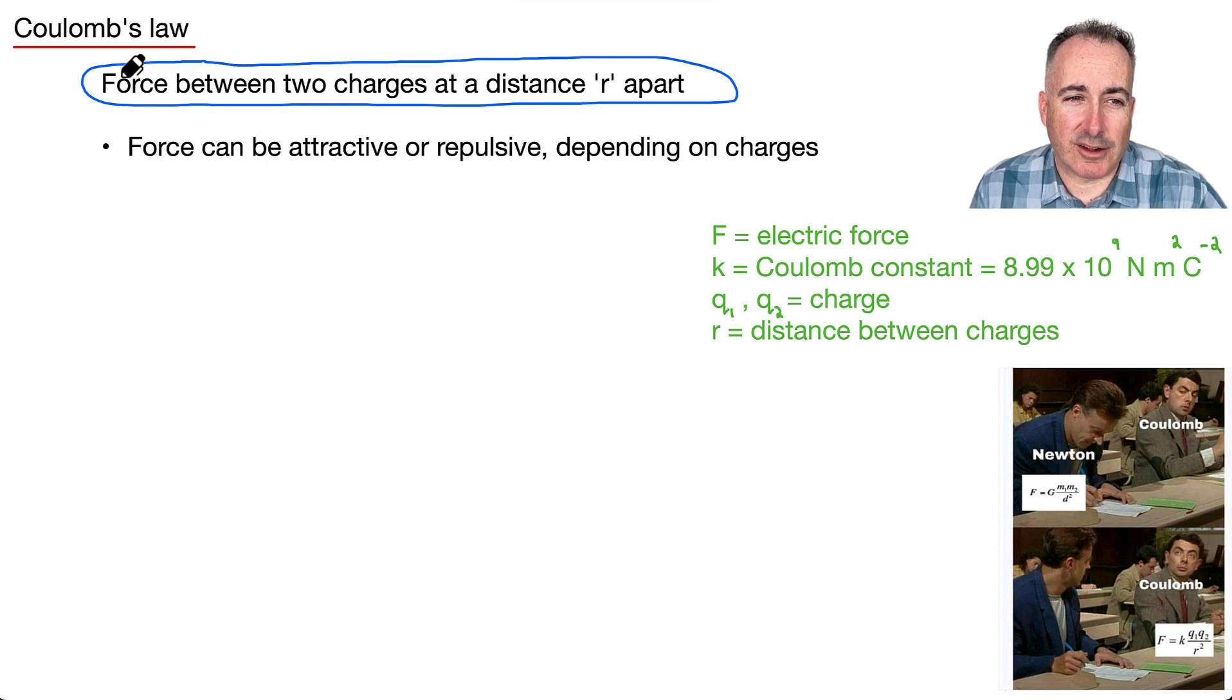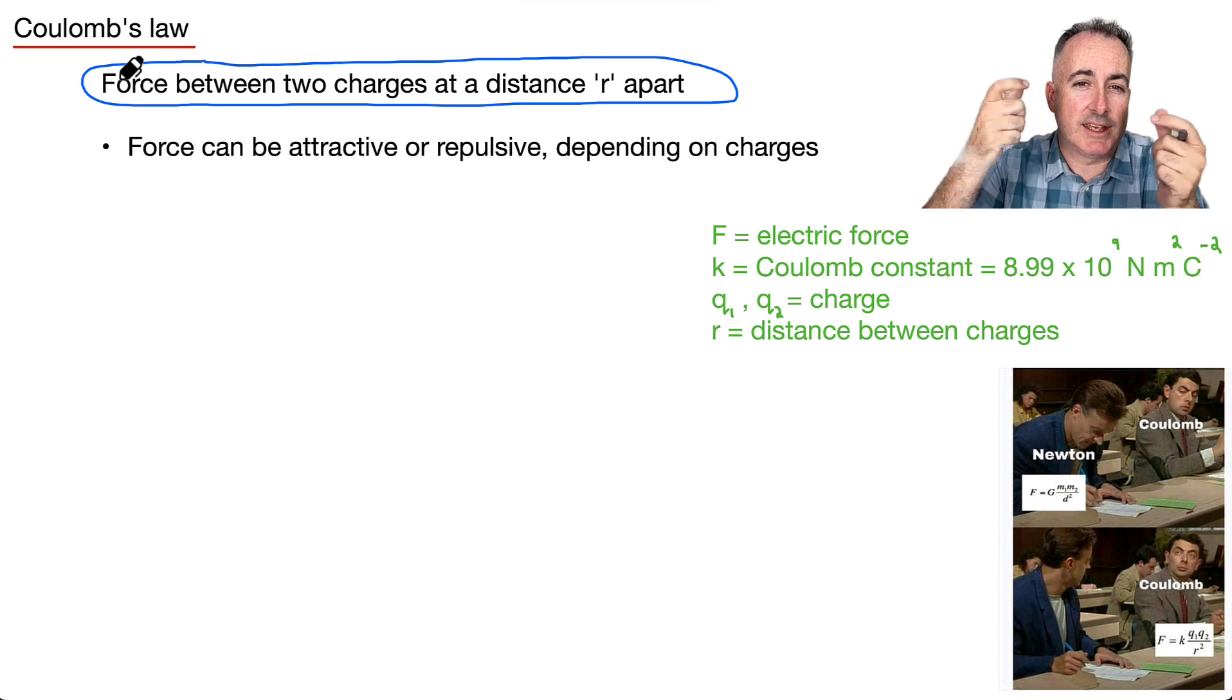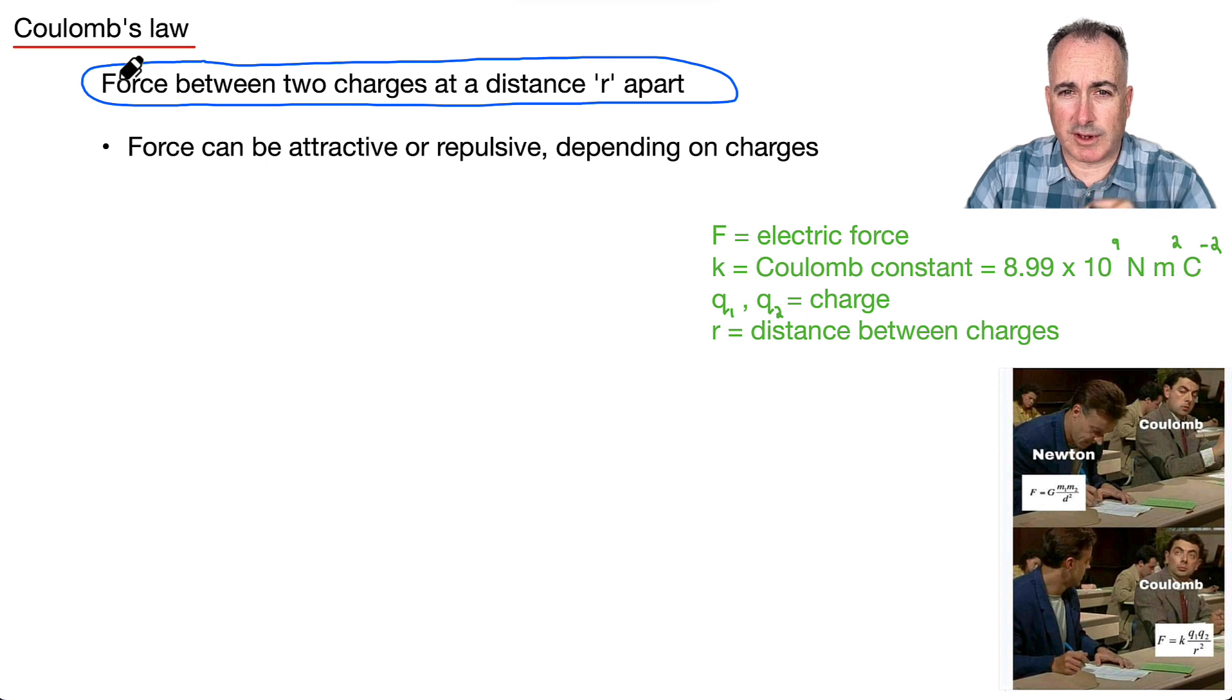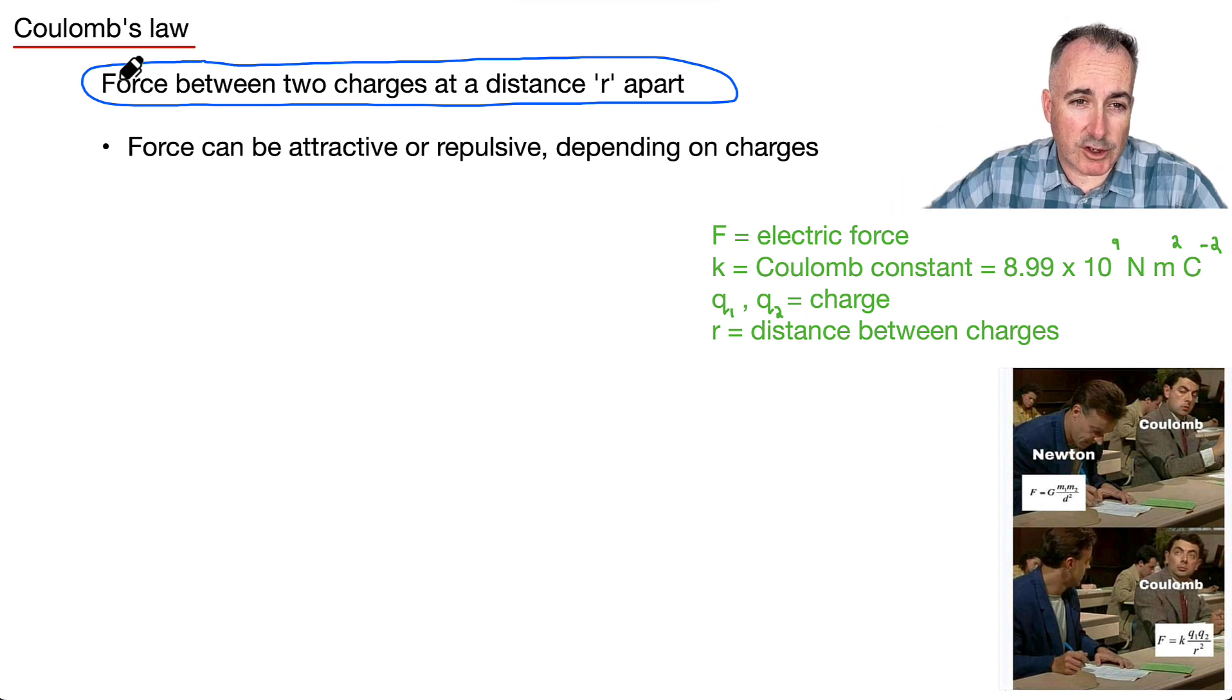So what is Coulomb's Law? Well, this is all to do with the force that's between two charges that are a distance r apart. Now, these charges, if they're plus and minus, for example, a positive and a negative, then they're going to attract, but it'll be the size of that force, the value of the force that's attracting. Or if they're like charges, if they're both positives or both negatives, it'll be the value of the force of repulsion. So it can be attractive or repulsive. It all depends.